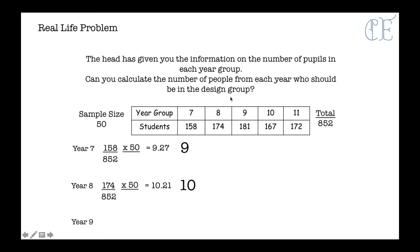Next we have year 9. As you can see in year 9, we have 181 students out of a total of 852. 181 divided by 852, press equals and then times by 50 because that's our sample size. So that gives us 10.62, which we would round to 11 students.